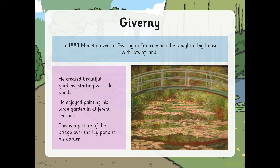Now Monet moved to Giverny in France in 1883, where he bought a big house with lots of land. Here he spent lots of time painting the landscape and the pleasures of his garden. He created beautiful gardens starting with lily ponds. He enjoyed painting his large garden in different seasons and at different times of day.